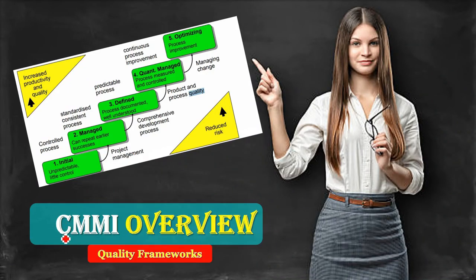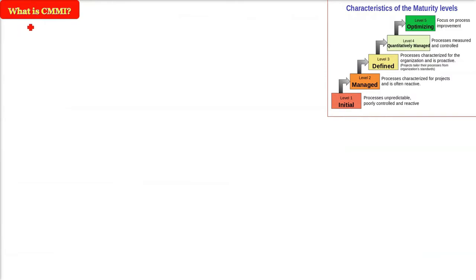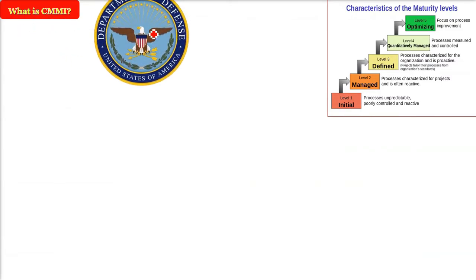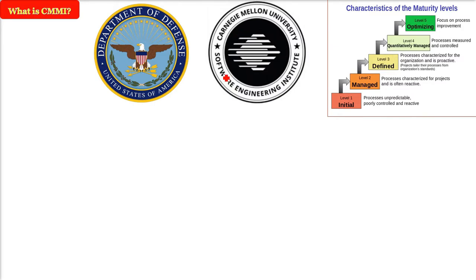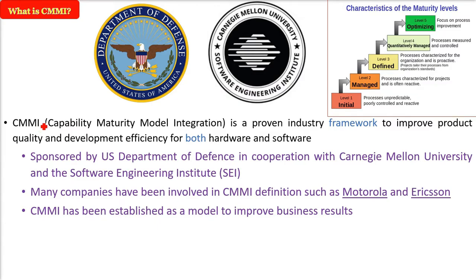CMMI — Capability Maturity Model Integration — is a process improvement framework developed by the Department of Defense along with Carnegie Mellon University and the Software Engineering Institute. It is a proven framework employed to improve product quality and development efficiency, applicable not only to hardware but to software as well.